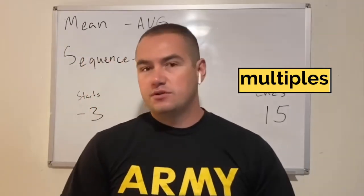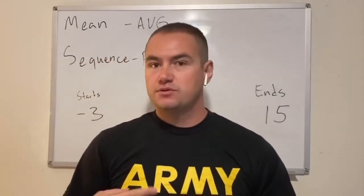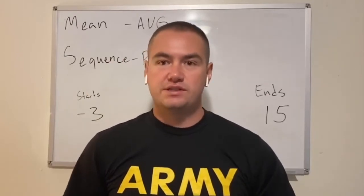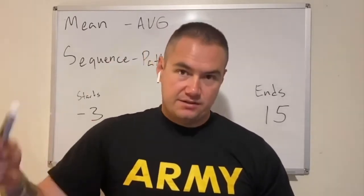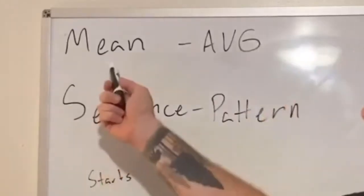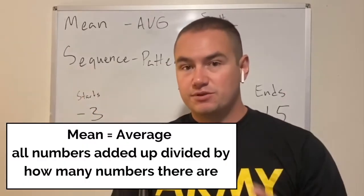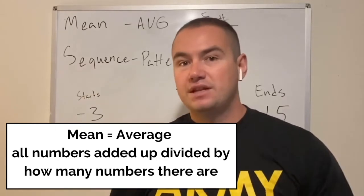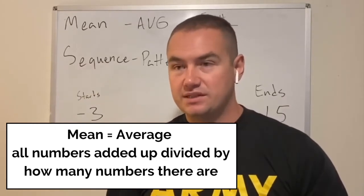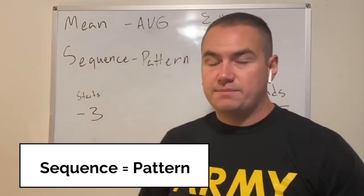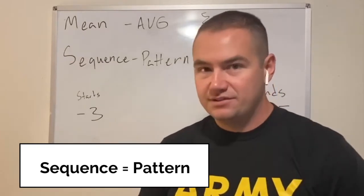Most students already know what multiples means. So multiples of 2: 2, 4, 6. Multiples of 3: 3, 6, 9. Multiples are how you multiply, right? Mean means average. The mean is all of the numbers put together divided by how many numbers there are. That's the easy way to say it. The sequence is the pattern. All it means is just pattern.